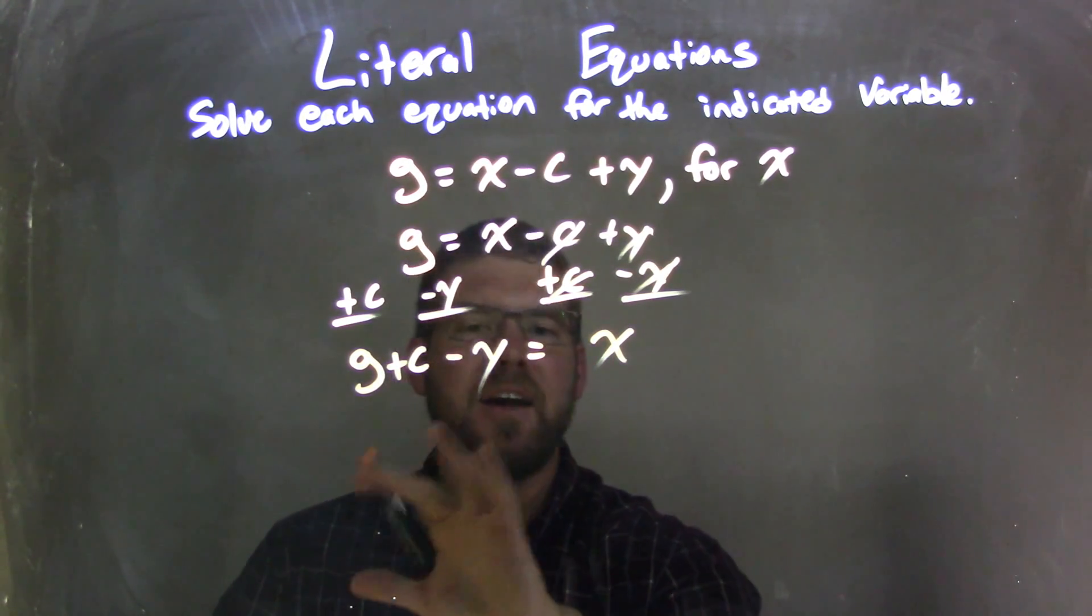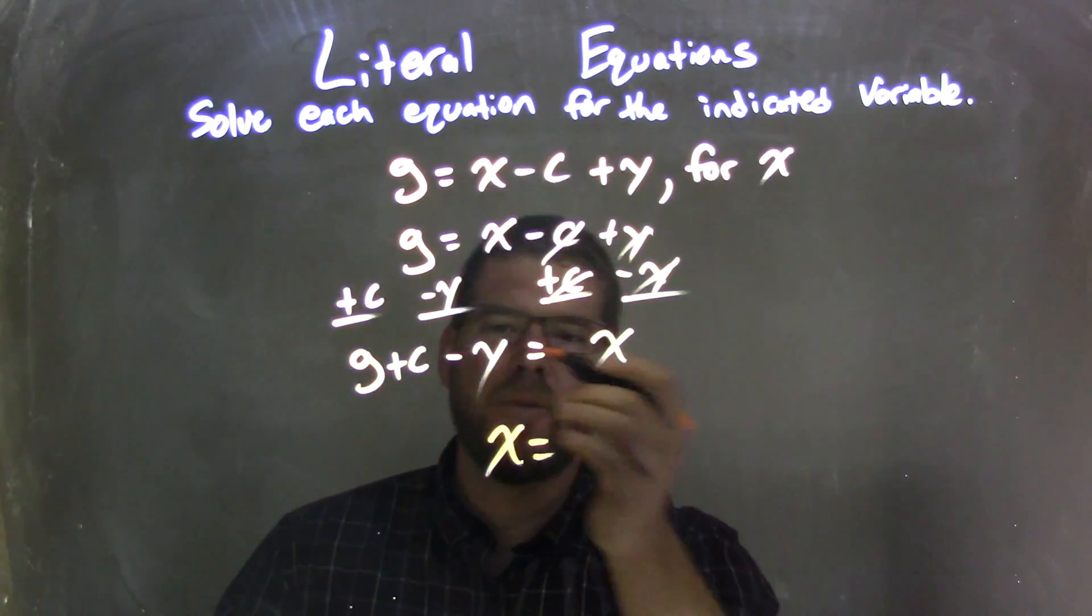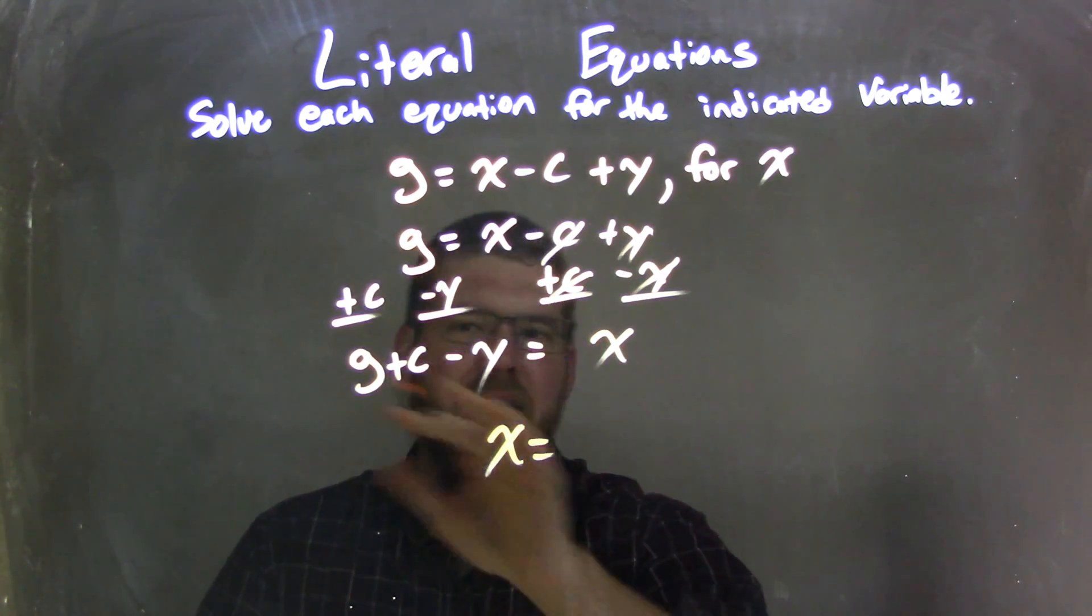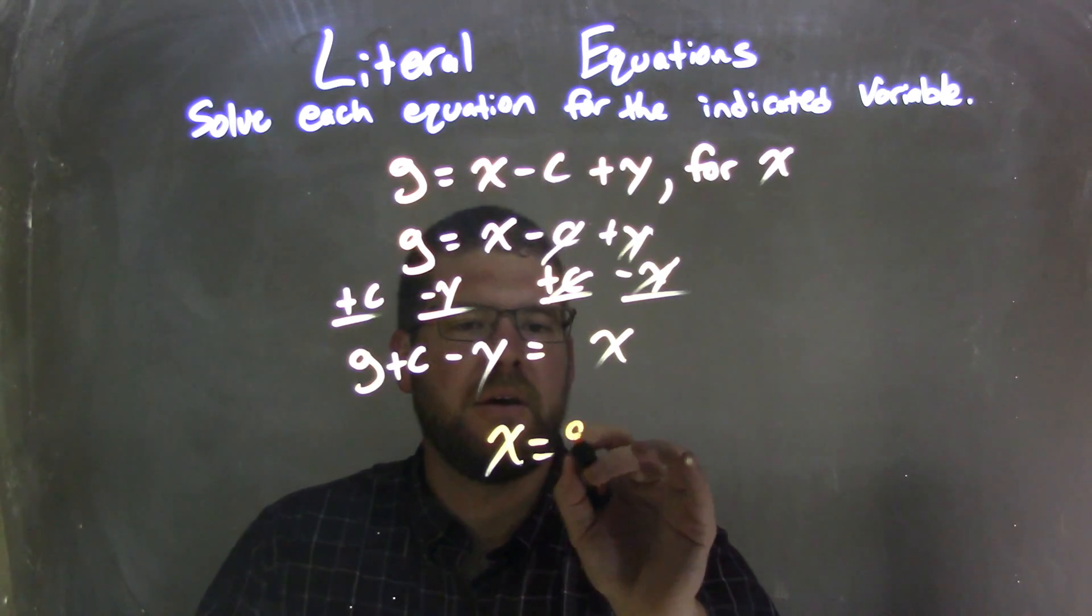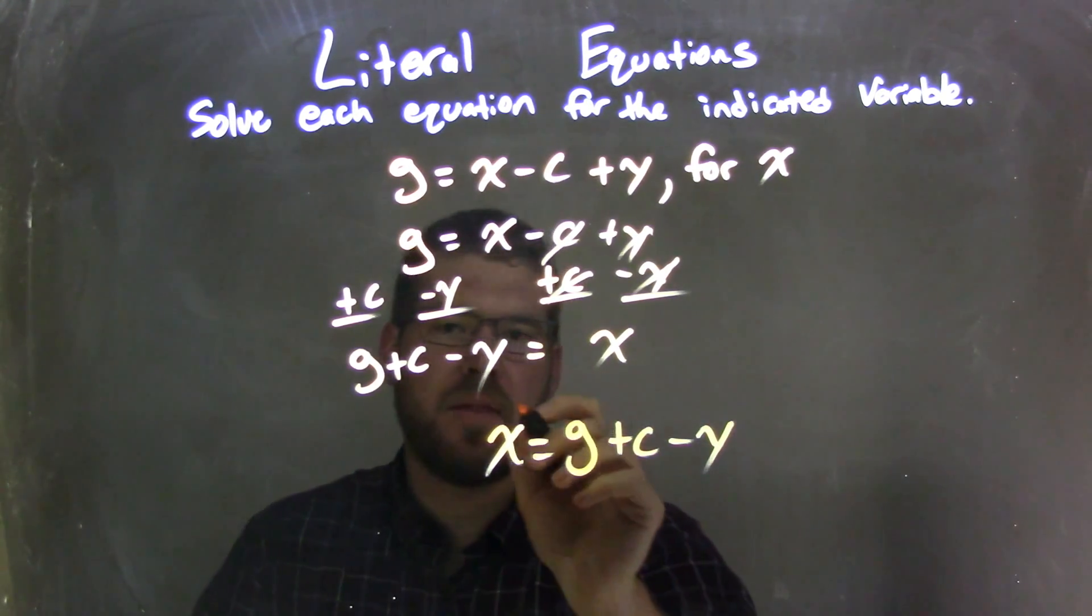All I need to do now is rewrite and have x come first because that looks nicer. The rest is already isolated. The rest is just there. We can't combine them. So you have g plus c minus y, and then we're done.